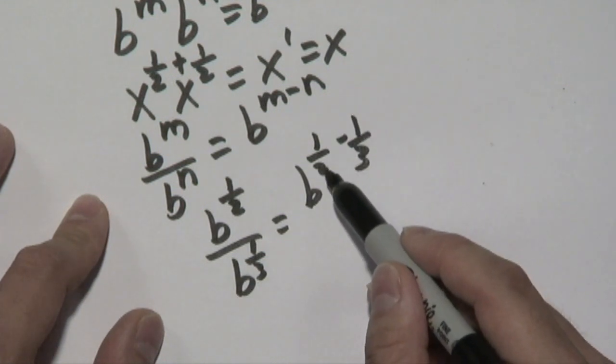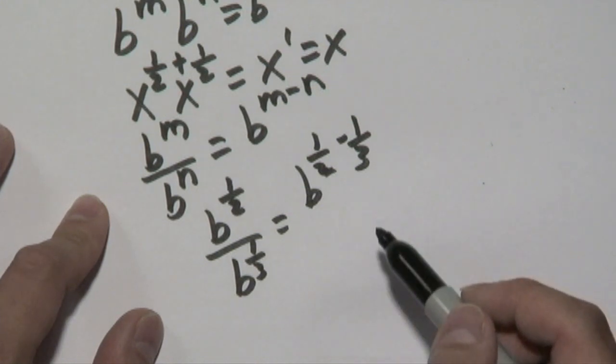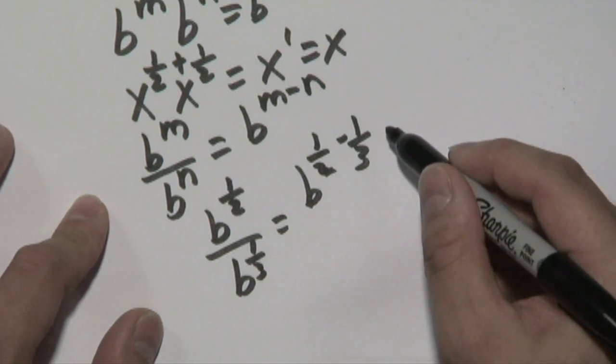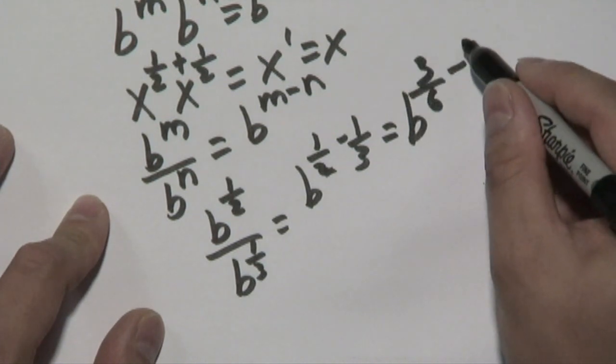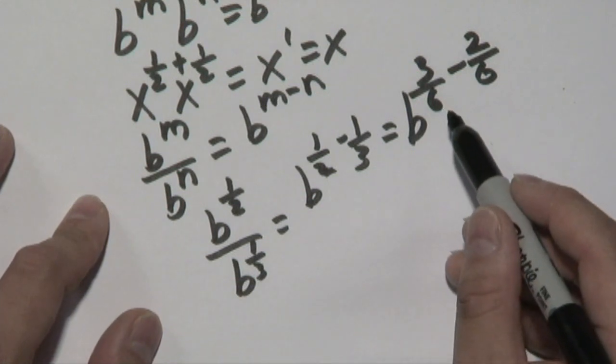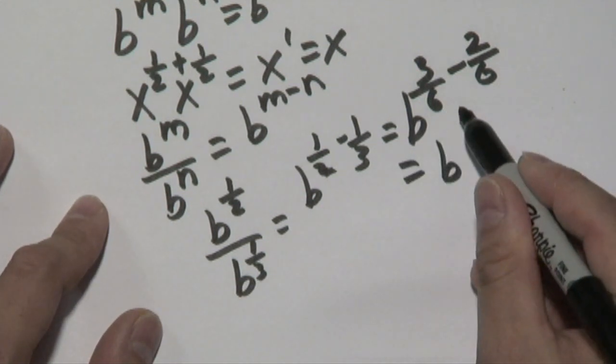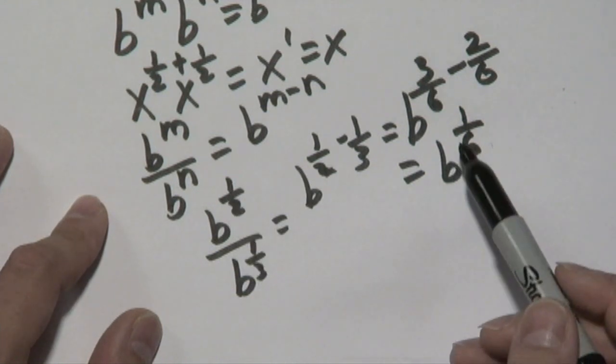And of course, in order to subtract these, you need the least common denominator between 2 and 3, which is 6. So this is going to be b to the 3 sixth minus 2 sixth. Remember, these numbers are still in the exponent, and 3 sixth minus 2 sixth is going to give you 1 over 6. So b to the 1 half over b to the 1 third is b to the 1 sixth.